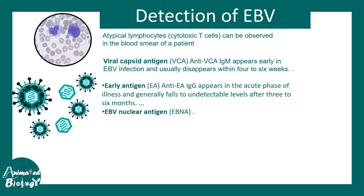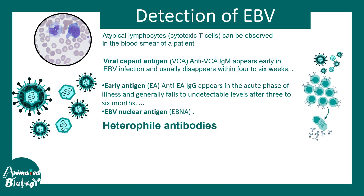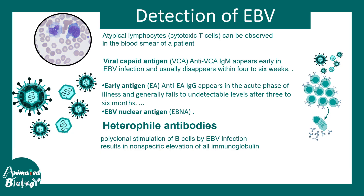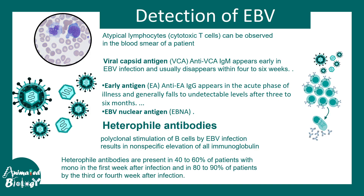Other detectable signatures include early antigens and EBV nuclear antigens. EBV causes overproliferation of B cells, producing too many plasma cells that secrete non-specific heterophile antibodies. These are present in 40 to 60% of patients with infectious mononucleosis and can be detected by the monospot assay, a quick blood test. Antiviral antibodies can also be detected using ELISA-based assays, and viral identification is possible with quantitative real-time PCR.